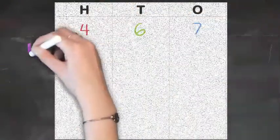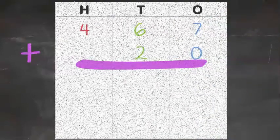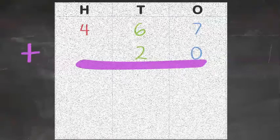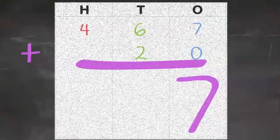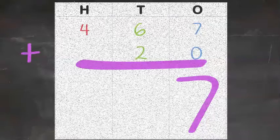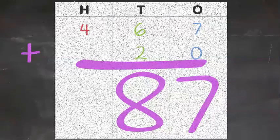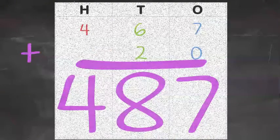Next, you were provided with 467 plus 20. Now, the 20 is important because we can see that there are no ones in 20. So, the 7 from 467 will stay the same in your total answer. But note, when you look at the tens column, because you are adding two more tens or 20, 467 will become 487 because the 6 and the 2 from the tens column equals 8. And then the hundreds column, the 4 remains the same. So, 467 plus 20 equals 487.